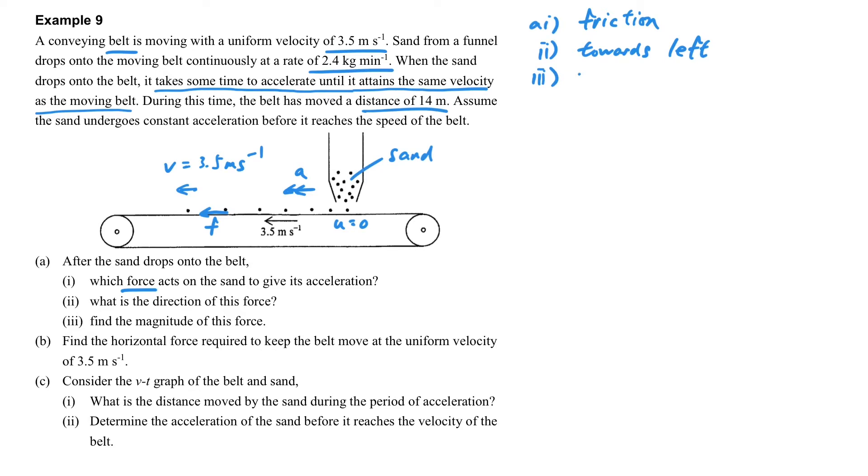If you get part A1 and 2, let's find the value of this force. So what is the force? We can use mv minus mu over t, and because we have a lot of sand adding on it, it is the rate of change of mass. Because it's 2.4 per minute, we have to divide by 60 in order to get the value correctly.